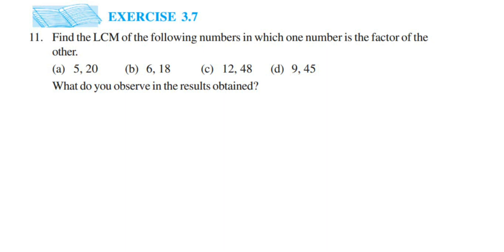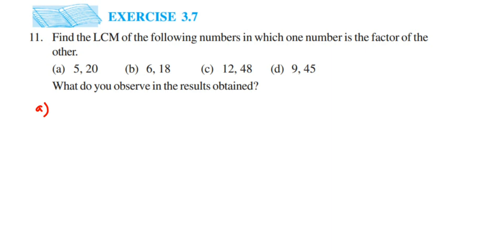Hey everyone, here I am doing exercise 3.7, 11th question. This is the 'Playing with Numbers' chapter and this is the last question of this exercise. The question is: find the LCM of the following numbers in which one number is a factor of the other. They have given four different questions and also asked what do you observe in the result. First we're going to find the LCM and then see our conclusion.